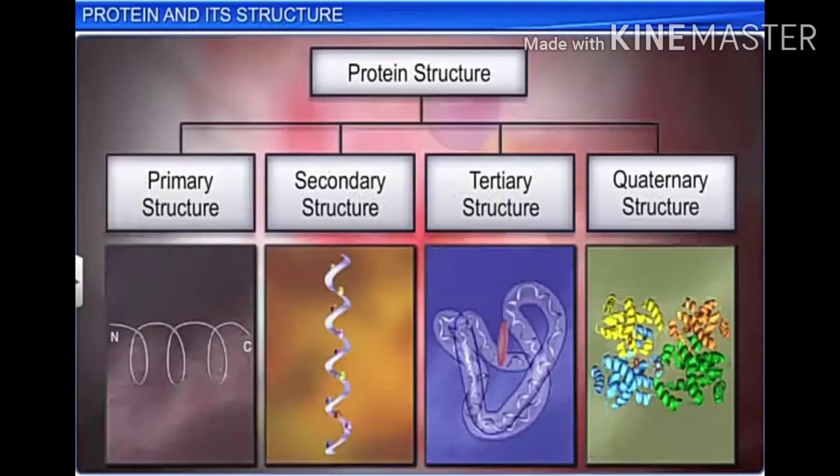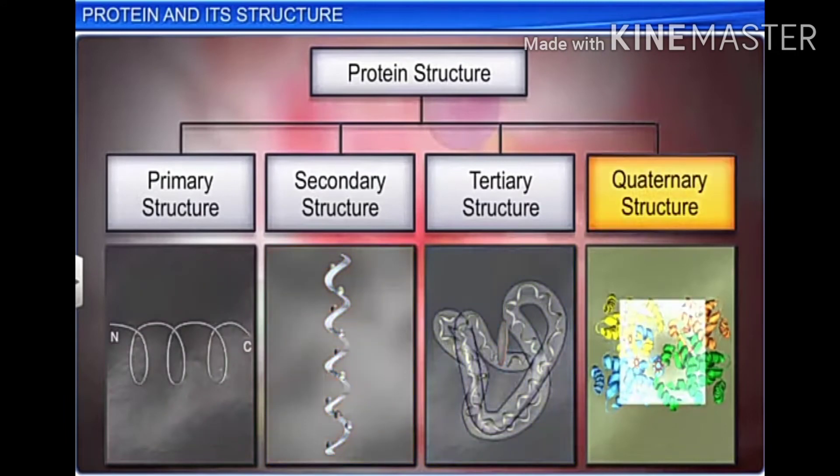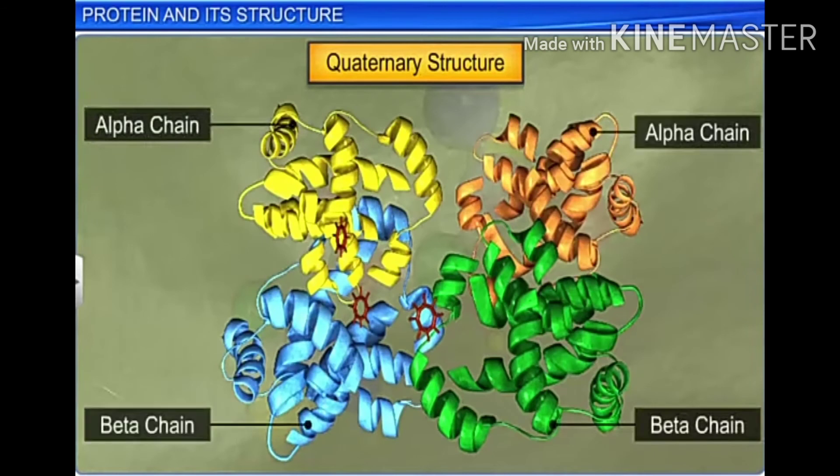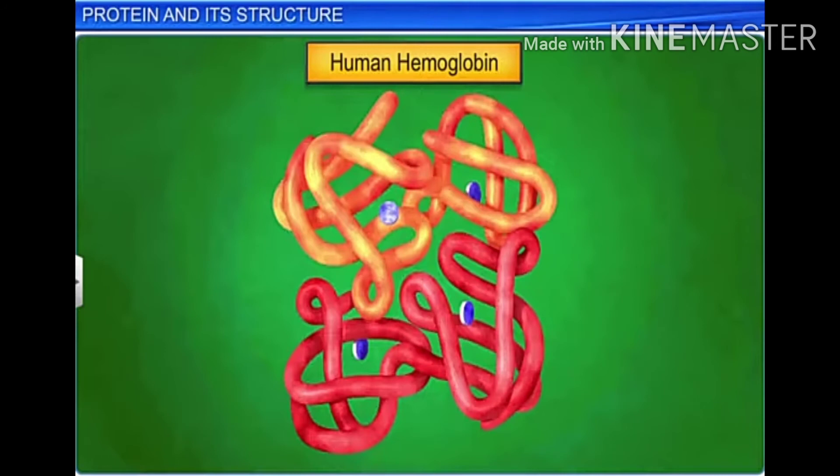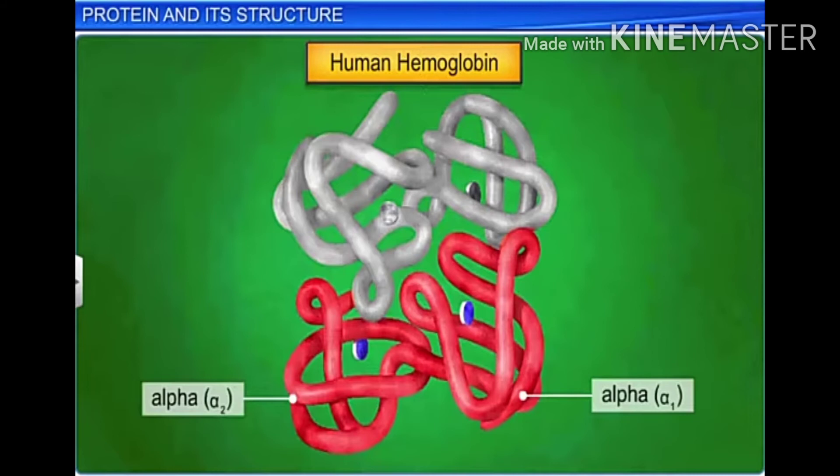The fourth level of protein structure is the quaternary structure. This structure is formed by several protein molecules or polypeptides, also known as protein subunits. These subunits are arranged as a linear string of spheres arranged one upon each other in the form of a cube or plate. For example, adult hemoglobin consists of four subunits, two of which are identical to each other. Therefore, two alpha type subunits and two beta type subunits collectively form human hemoglobin.